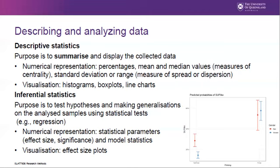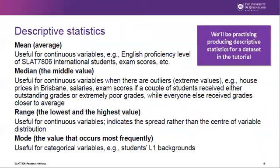Today we're going to focus specifically on descriptive statistics. Within the scope of descriptive statistics, we can describe the mean — the average of a particular group — which is useful for continuous variables. For example, we could use the mean to describe the English proficiency level of international students, or an average exam score. The median value is similar to the mean, but it represents the middle value rather than the average. It is also useful for continuous variables, especially when the data has outliers or extreme values that skew the mean — for example, house prices in Brisbane or exam scores where a few students received very high or very poor grades. By looking at the median, we try to mitigate the influence of outliers.